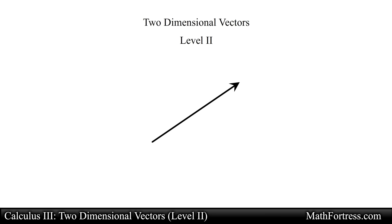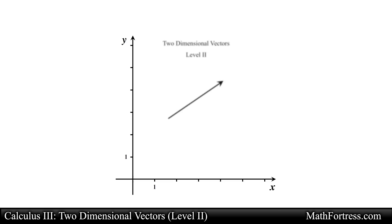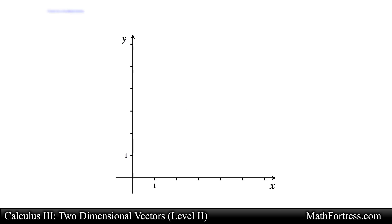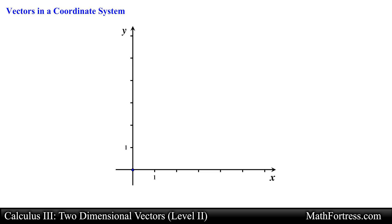Two-dimensional vectors, level 2. Now that we have a better understanding of what vectors are, let's start describing vectors more precisely with coordinate points. Recall that vectors have an initial point and a terminal point. Because vectors can be described using these two points, we can describe them by using ordered pairs in a rectangular coordinate system.